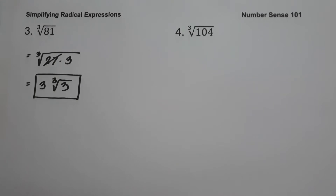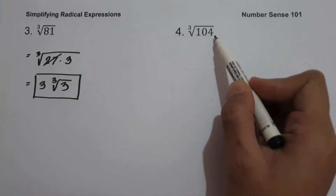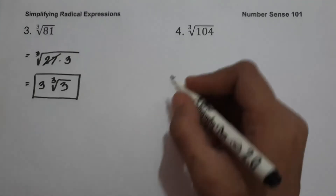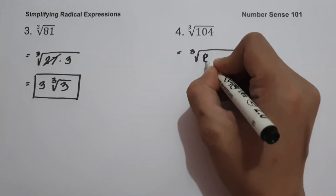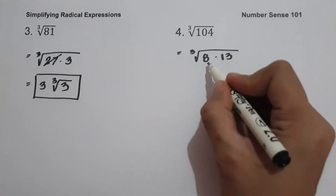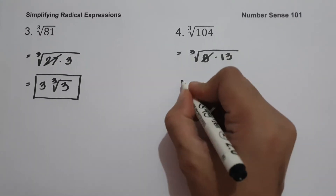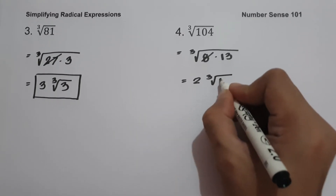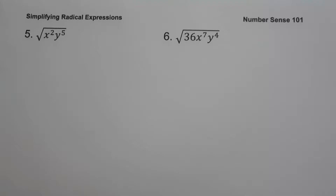On example number 4, we have cube root of 104. Since our index is 3 and 104 is not a perfect cube, to simplify cube root of 104 we are going to find two factors where one of the factors is a perfect cube. The factors of 104 are 8 and 13. 8 is a perfect cube, and 8 multiplied by 13 is 104. The cube root of 8 is 2. Therefore our answer is 2 cube root of 13.